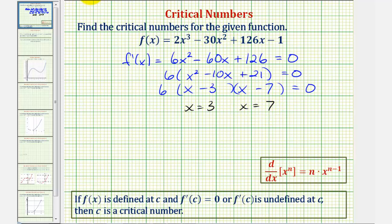And therefore we have two critical numbers. The critical numbers are x equals three and x equals seven.